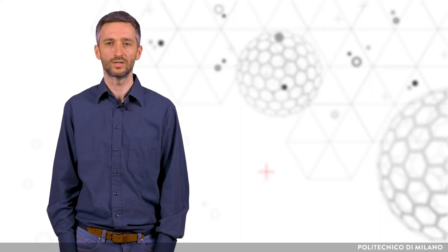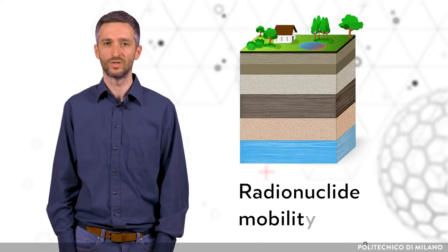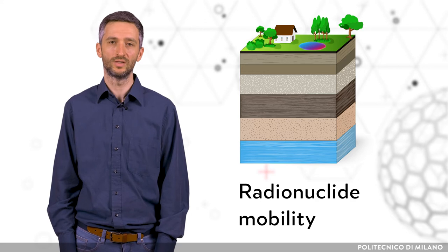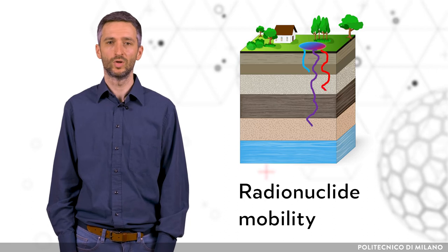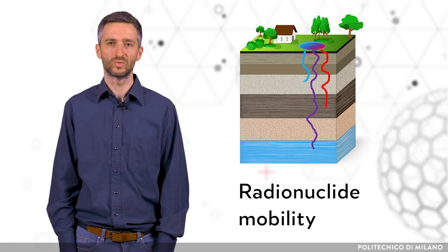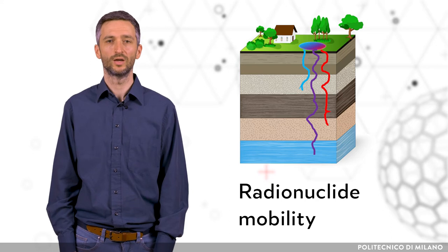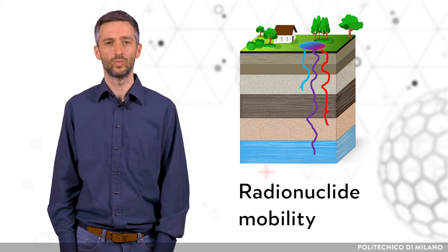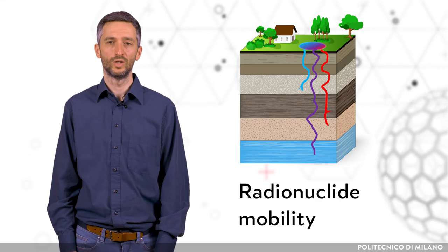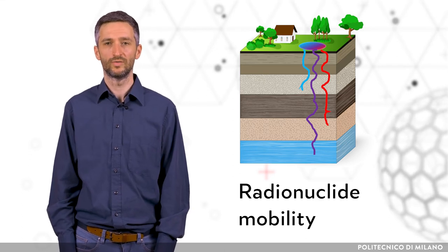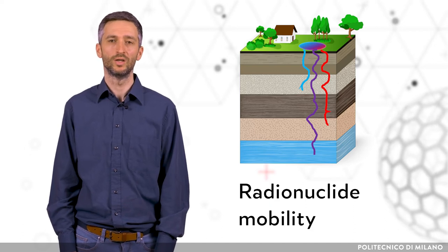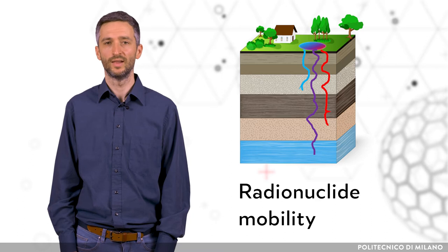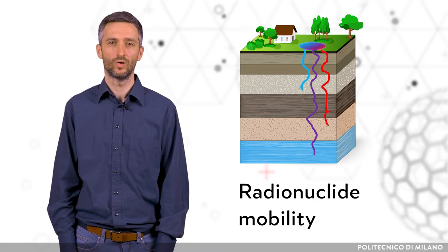When we know which radionuclides are present in contaminated areas and their quantity, the next step is to assess how mobile or how fast they travel in environmental compartments. It is important to know when in the future we can expect them to reach groundwater sources, agricultural areas, or human living environments. Radionuclides can be present as different chemical species — a typical example being uranium, which is more mobile in its oxidized form of 6+ and less mobile in its reduced form of 4+.